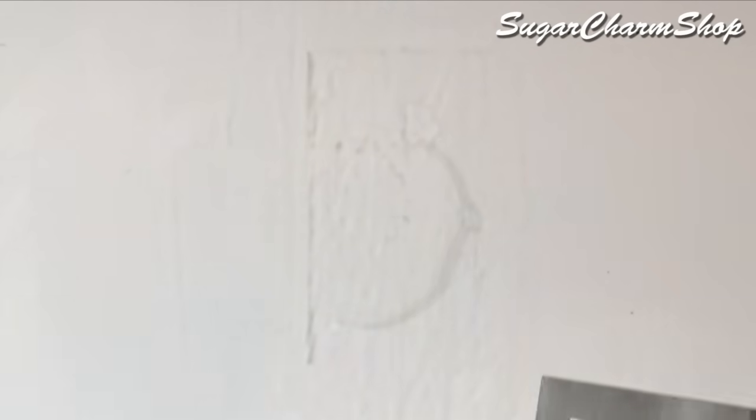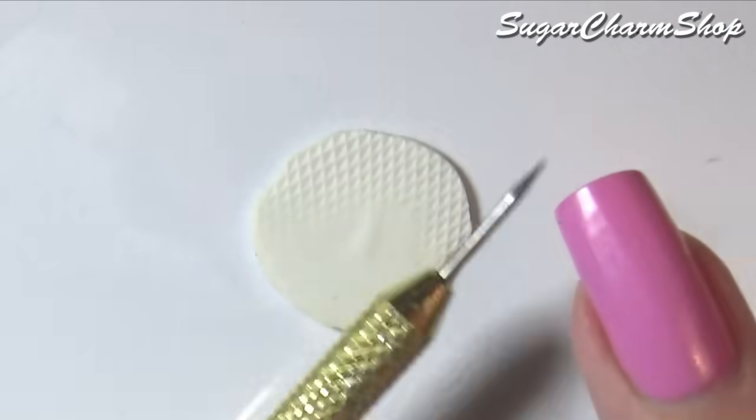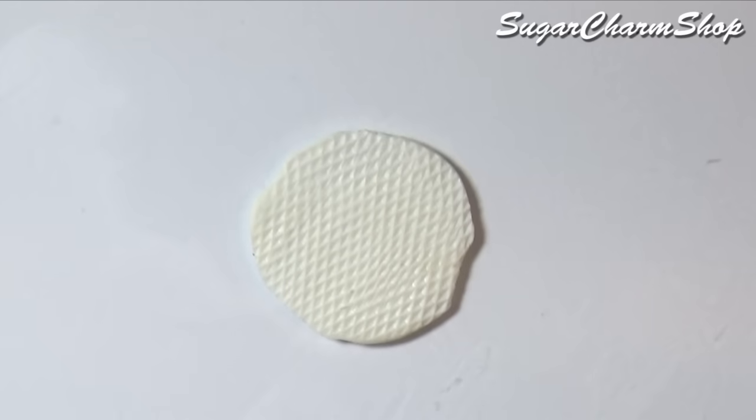I also made some super simple cones by just rolling out a thin sheet of a light brown color, adding some texture using one of my tools and then adding some soft pastel.